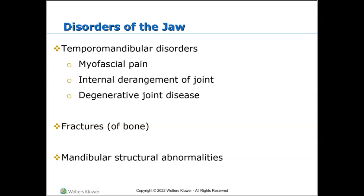Degenerative joint disease, also known as osteoarthritis or OA, is a common wear-and-tear disease. The underlying cause is typically chronic repetitive motion that results in inflammation and structural joint damage. Factors that make it more likely for patients to develop OA include aging, being overweight or obese, history of an injury or surgery to a joint, overuse from repetitive movements, joints that do not form correctly, or a familial history of osteoarthritis.